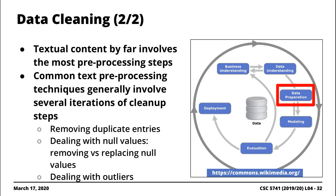When it comes to specific types of data like textual content, it turns out it's the type of data where you get to do a lot of things. This includes stemming, stopword removal, and making sure you transform text using consistent casing — making a decision as to whether you're going to use all lowercase or uppercase letters. The generic steps are: remove duplicates, remove null values, deal with outliers, and then perform the preprocessing steps specific to textual content — stopword removal, case folding, and stemming.